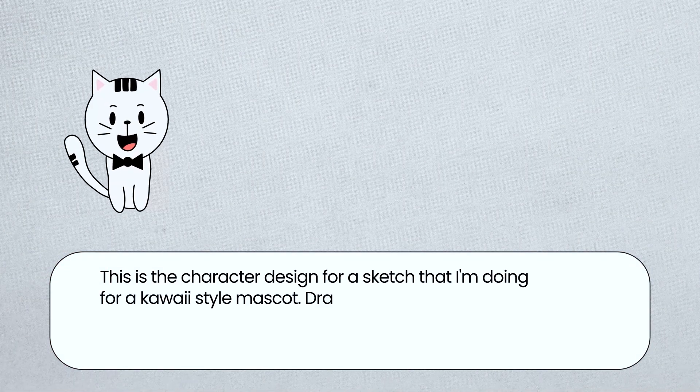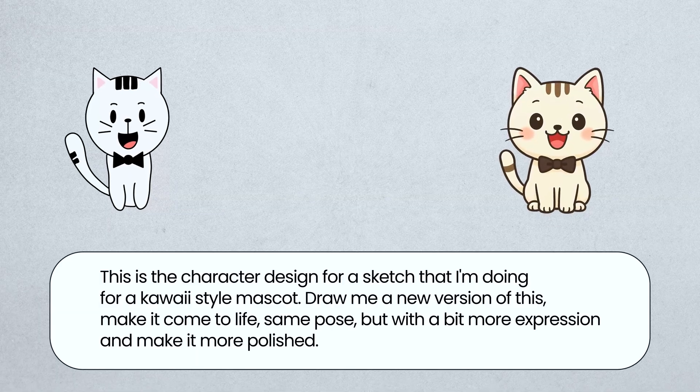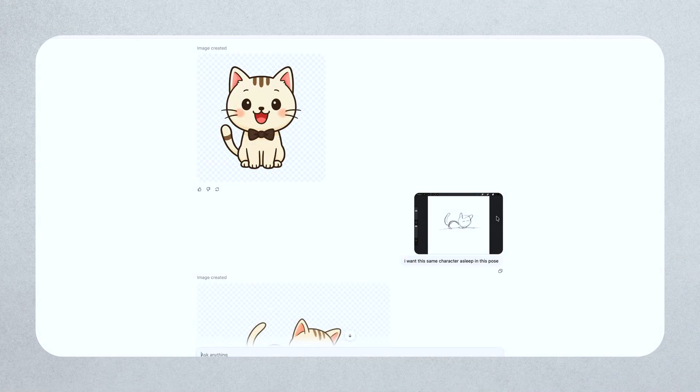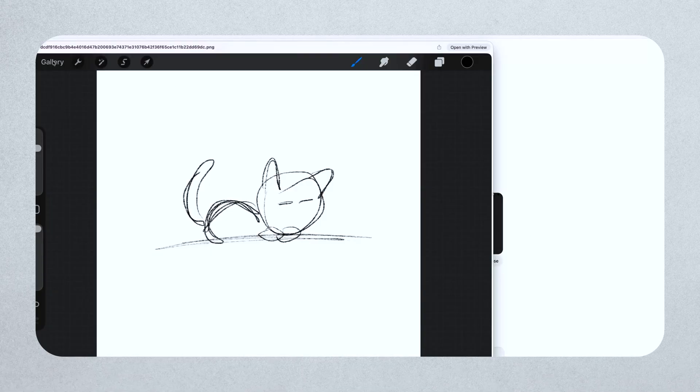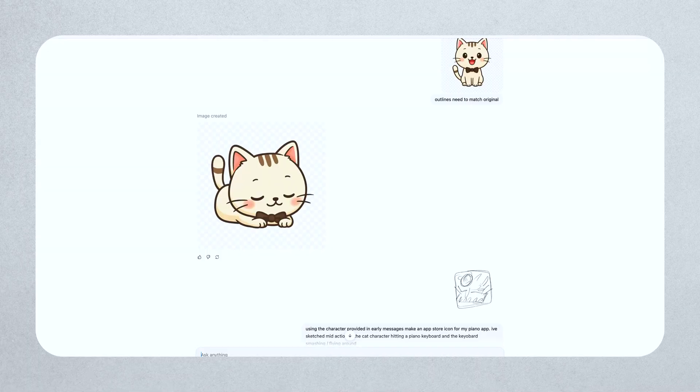But with the help of ChatGPT, I can fully flesh out the design. This is the character design for a sketch I'm doing for a kawaii-style mascot. I prompted: draw me a new version of this, make it come to life, same pose, but with a bit more expression and make it more polished. Wow — that actually looks pretty good! I want ChatGPT to generate the full mascot design, body and all, on a transparent background. This acts as my template, and I can ask ChatGPT to manipulate my mascot into any pose I want while keeping the design and proportions consistent. First, I do a rough sketch of a pose, then I use the prompt: I want this character doing XYZ in this pose. I provide ChatGPT with the mascot template and my sketch. It's important to do some of your own creative thinking here — you can't really outsource the design elements to ChatGPT. It's really only good at two things: polishing the ideas you've already come up with, or coming up with its own bland, boring ideas. If you sketch your idea first, it helps prompt ChatGPT to provide a better mascot and pose, and it saves you a bit of back and forth trying to get the mascot absolutely perfect.